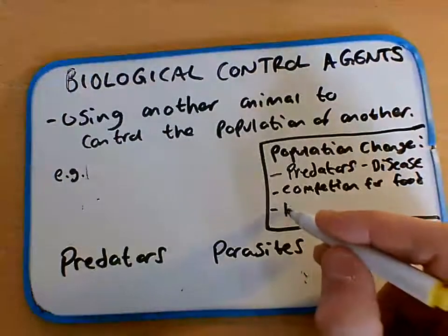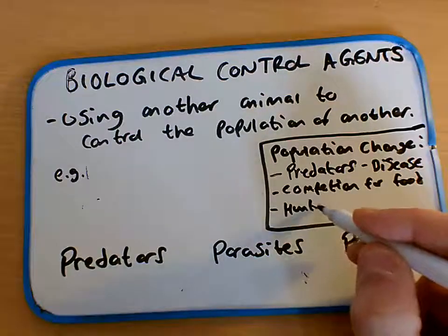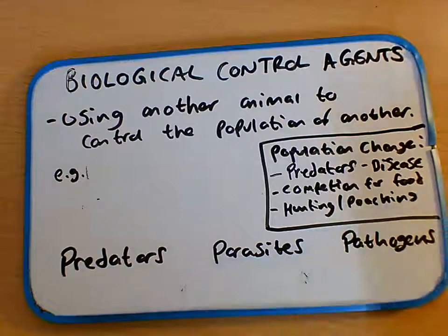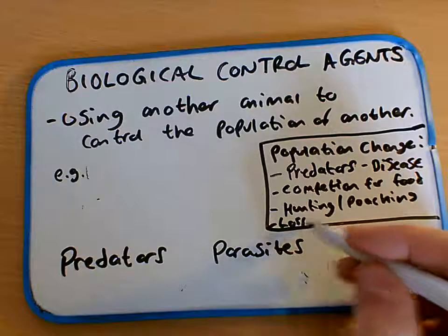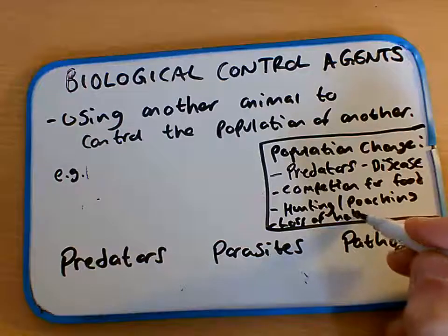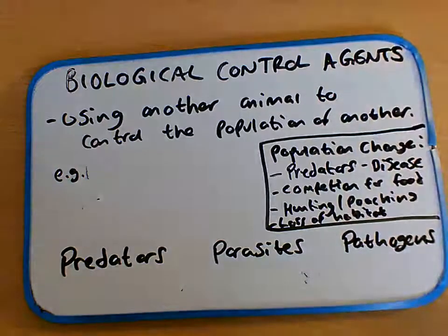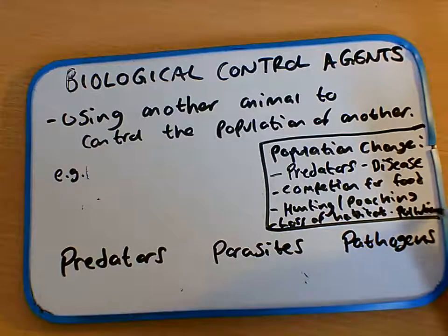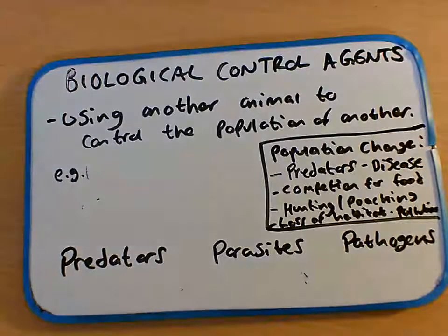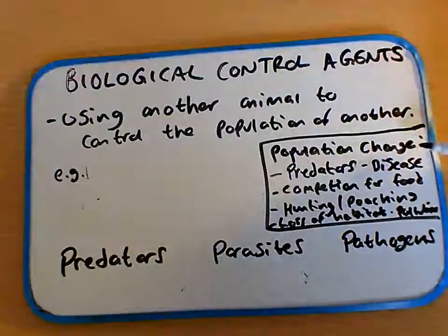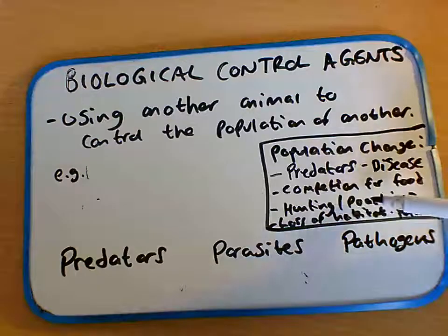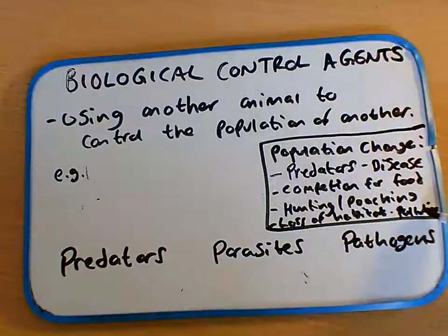There could be some human influence — something to do with hunting, poaching, or loss of habitat, such as deforestation, and maybe pollution. So populations change naturally anyway; they fluctuate, they go up and down throughout the year due to the impact of predators, disease, competition for food, hunting and poaching, loss of habitat, and pollution.